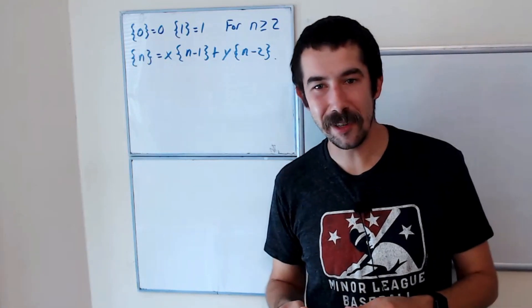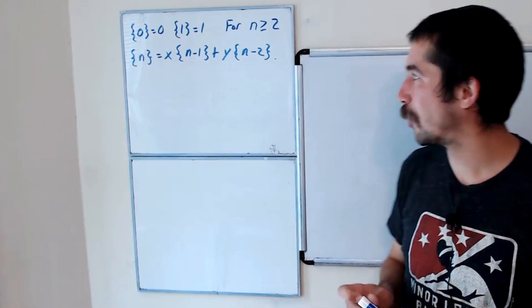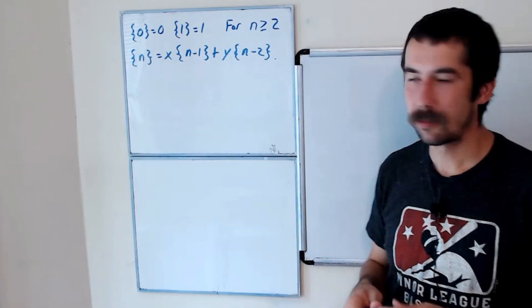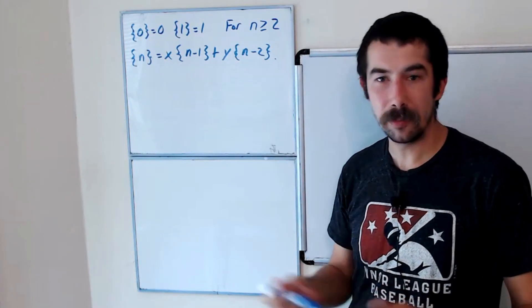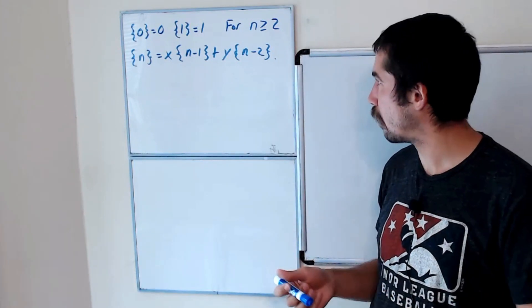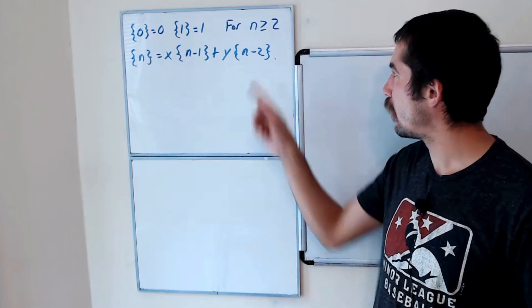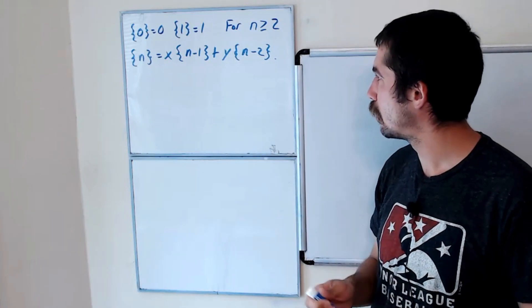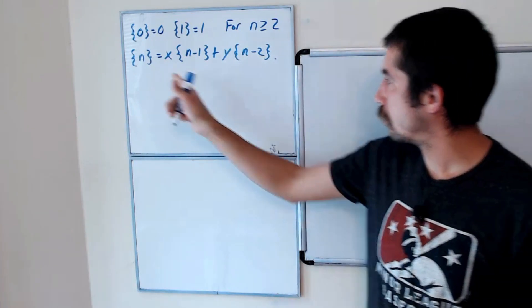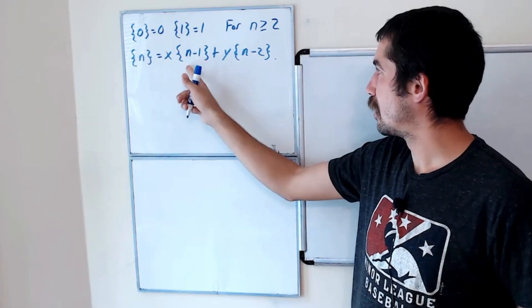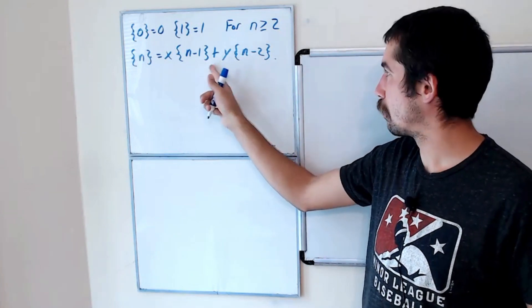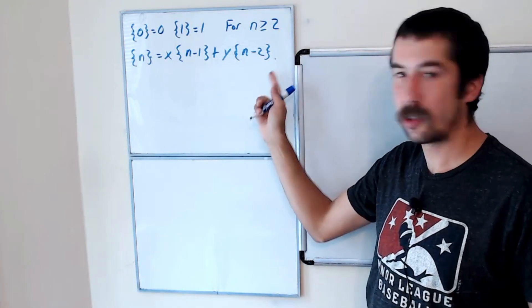I have some more on the Lucas polynomials today. As a reminder, the 0th Lucas polynomial is 0, the first Lucas polynomial is 1, and for n greater than or equal to 2, the nth Lucas polynomial is x times the previous one plus y times the one before that.